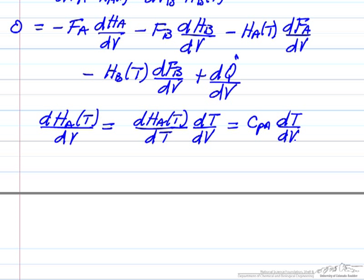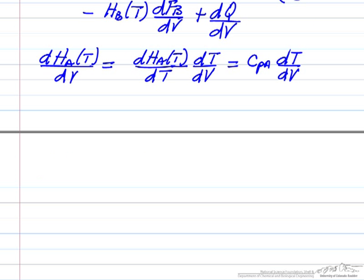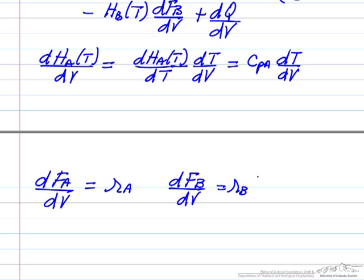We can also make the substitution for the derivative of FA with respect to V. So the derivative of FA with respect to V, we know from our mass balance is R sub A. Similar derivative of FB with respect to V is RB, which is minus RA.